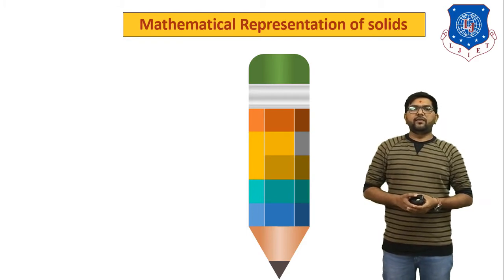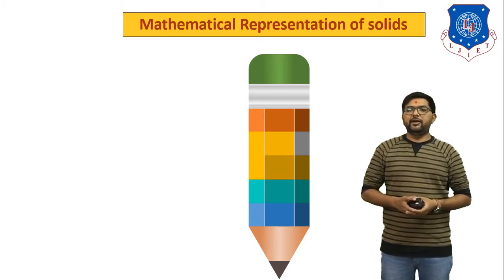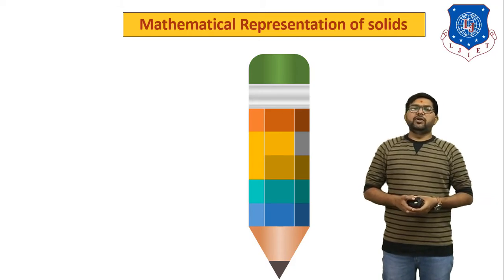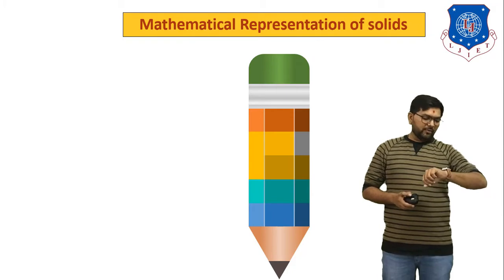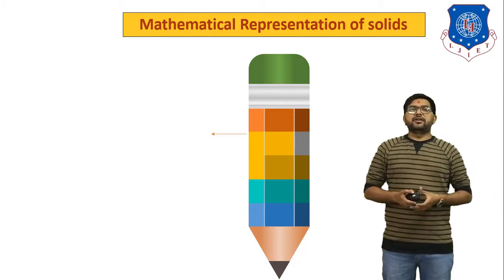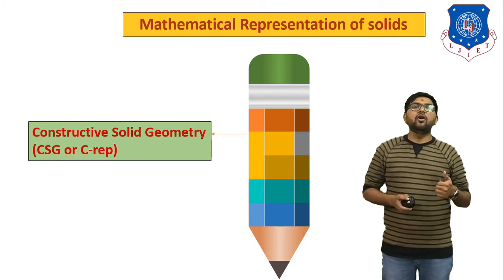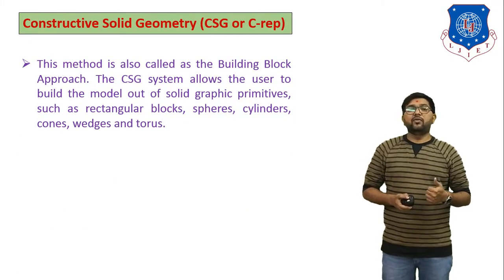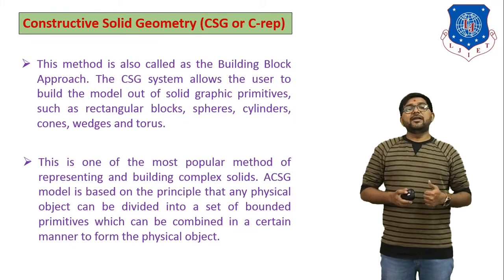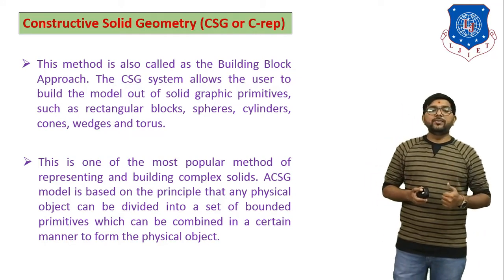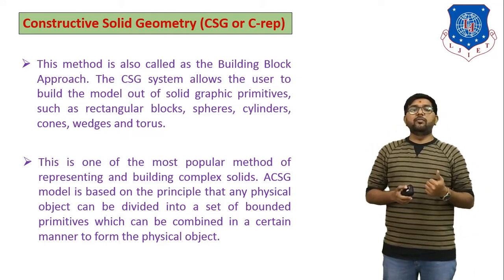Hello students, myself Neon Godia from LGA Institute of Engineering and Technology. In the last session we discussed some methods of solid modeling. In today's session we have to discuss one more method of solid modeling — that is Constructive Solid Geometry, also known as CSG, C-representation, or C-rep. This method is also called the building block approach. The CSG system allows the user to build the model out of solid graphic primitives such as regular blocks,